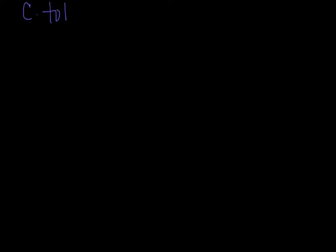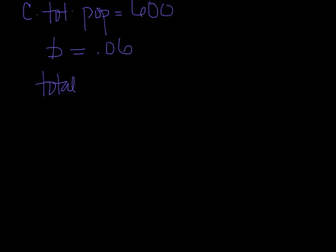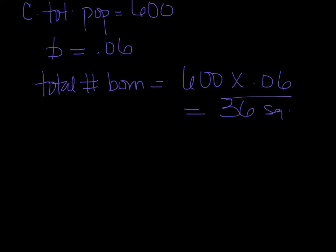Part C asks: what is the actual number of squirrels that were born during this period? Round to the nearest whole number. Part C is similar to part B, except instead of working with death rate, we're working with birth rate. We go back to the total population of 600 squirrels, and our birth rate b equals 0.06. We take the total population and multiply it by the per capita birth rate: 600 times 0.06 gives us 36 squirrels born. There we go.